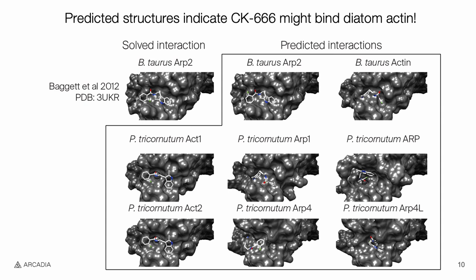We took the solved structure of CK666 bound to bovine ARP2 and ran some predictions replacing ARP2 with diatom actins and actin-related proteins. The binding pocket is in dark gray and the CK666 molecule is in white. As you can see, the orientation of CK666 is very similar between bovine ARP2 and Phaeodactylum actin-1 and actin-2, suggesting CK666 may indeed be directly inhibiting actin polymerization.